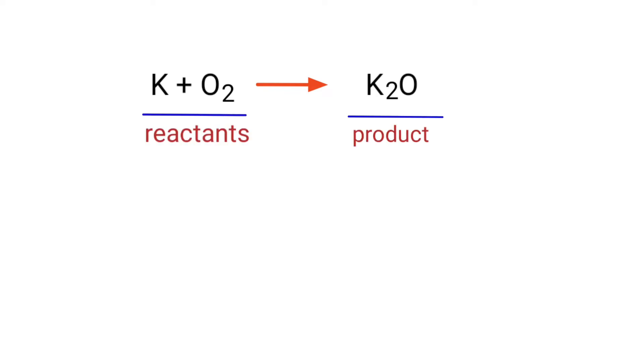In this equation, the reactants are potassium and oxygen and the product is potassium oxide. In the reactants side there are one potassium atom and two oxygen atoms present. And on the product side there are two potassium atoms and one oxygen atom present.